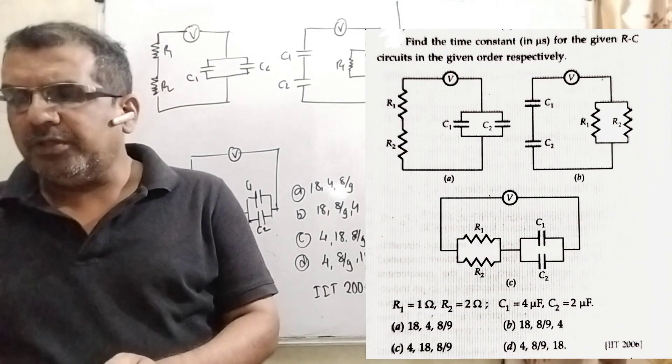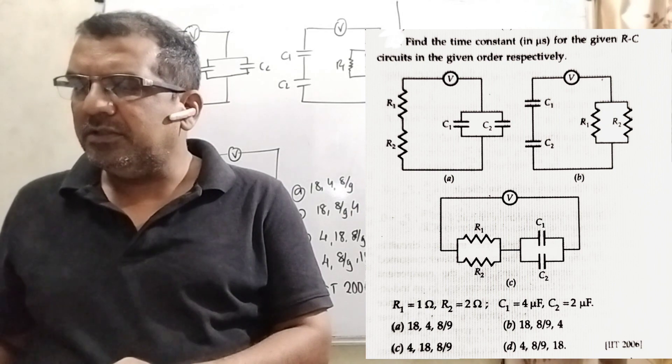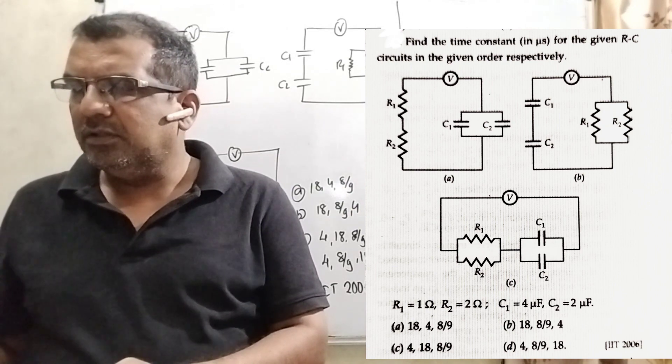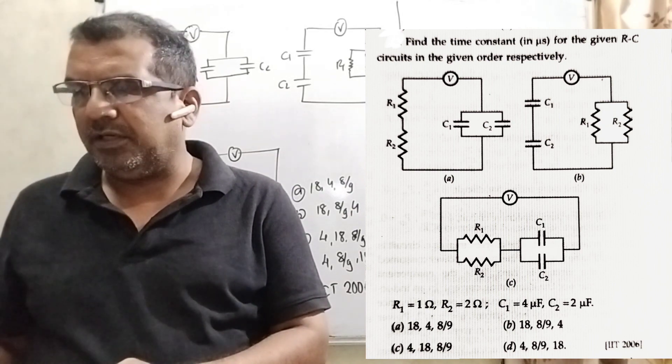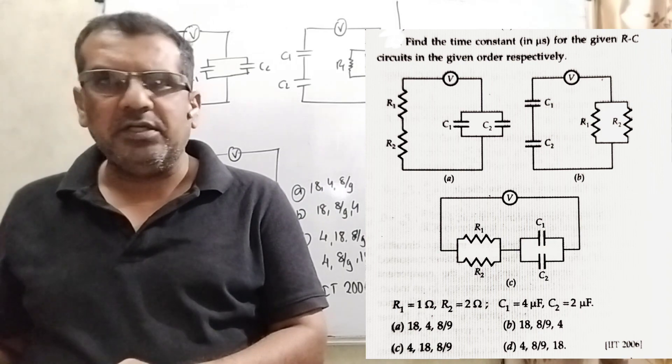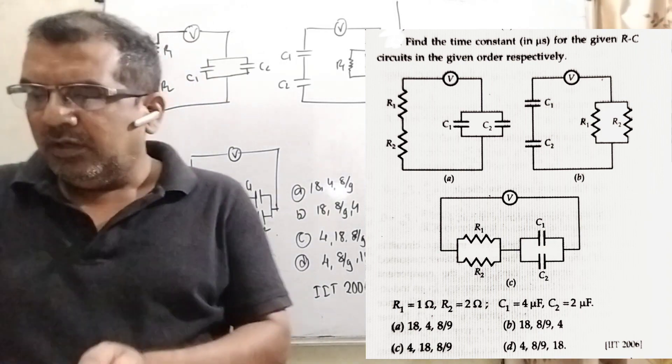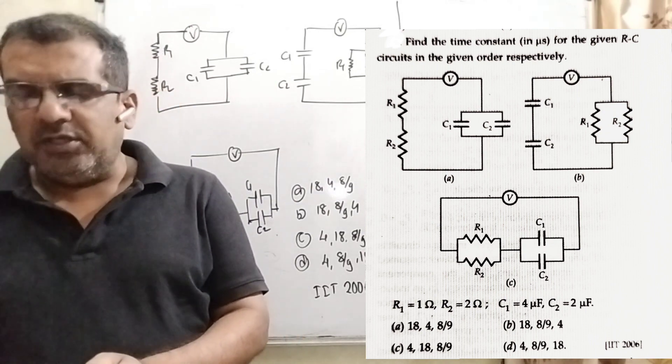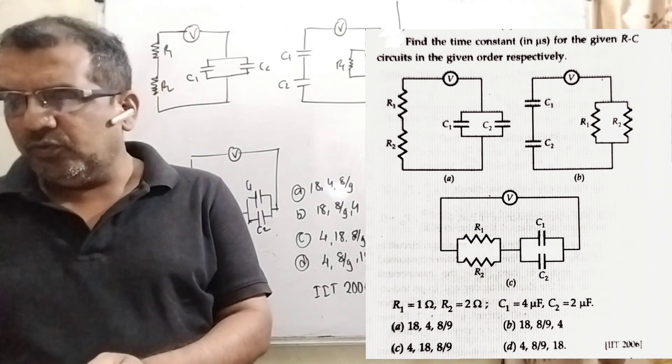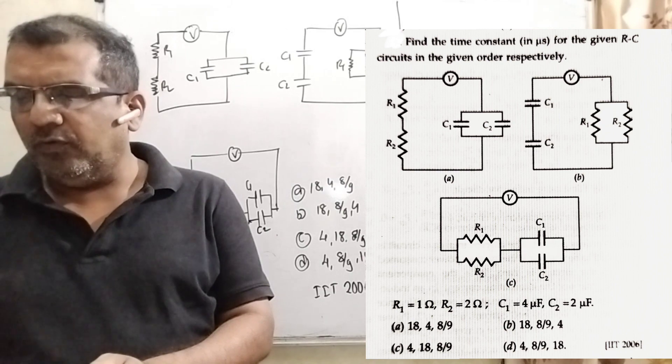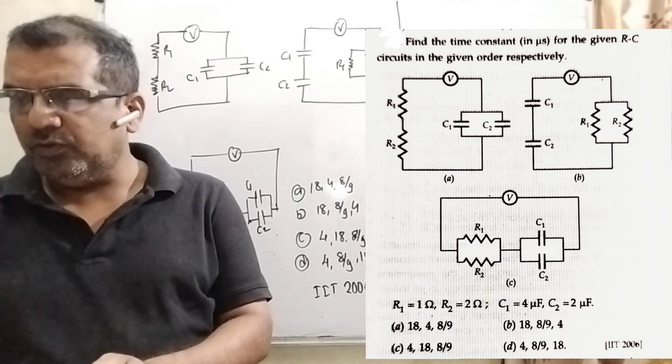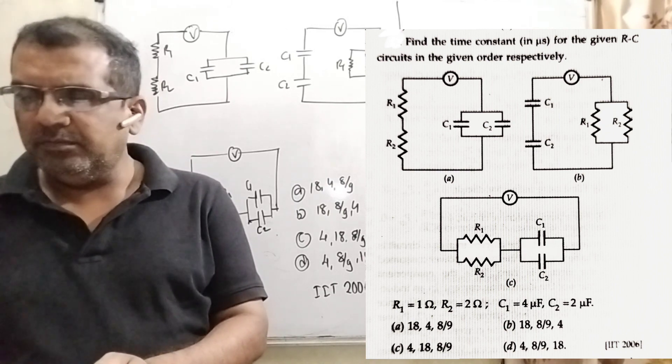Now, here is the question. Find the time constant in microseconds for the given RC circuits in the given order respectively. Here we have given three diagrams. R1 is equal to 1 ohm, R2 equal to 2 ohm, C1 equal to 4 microfarad, C2 equal to 2 microfarad. Here options are given.